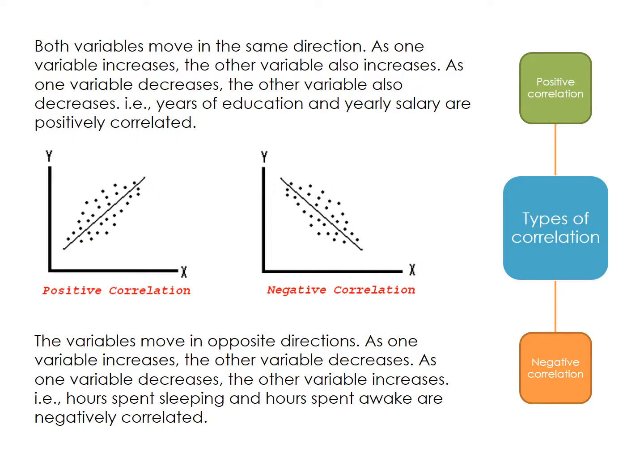There are different types of correlation. The first is positive correlation: both variables move in the same direction. As one variable increases, the other variable also increases. As one variable decreases, the other variable also decreases. An example is years of education and yearly salary, which are positively correlated.